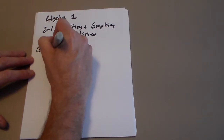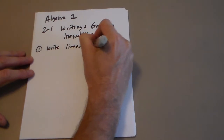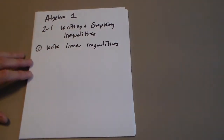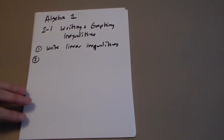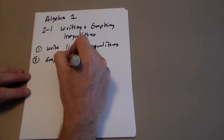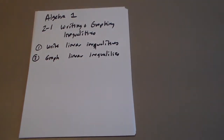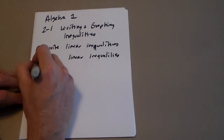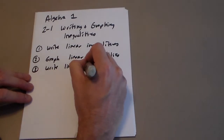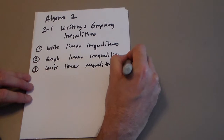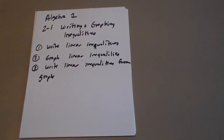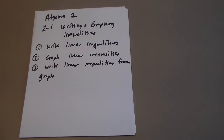Here are our goals for this lesson: number one, write linear inequalities; number two, sketch the graphs of linear inequalities; and finally, write linear inequalities from graphs — putting the two things together. That's what we're looking at today. I'm hopeful you guys are paying attention and following along, listening to the sweet sounds of Taylor Swift in the background — that's what I did for a lot of my videos last year during COVID.